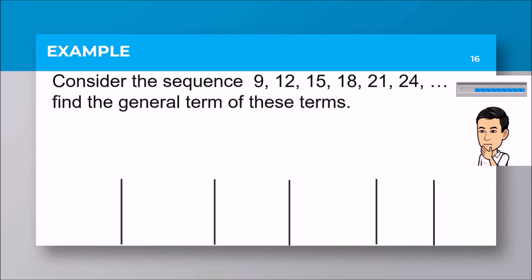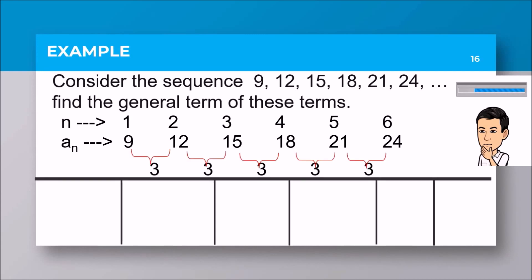Here is the problem. Consider the sequence 9, 12, 15, 18, 21, 24. Find the general term of these terms. Doing this problem needs better analysis. We always start with n equals 1, 2, 3, and so on, expecting a result of 9, 12, 15. Looking at the given a sub n, it has a difference of 3. So how many multiples of 3 or how many 3s are needed to go back with those values of a sub n? Let us plug in those values of n: 3 times 1, 3 times 2, 3 times 3.